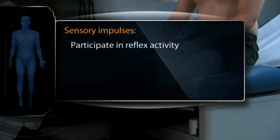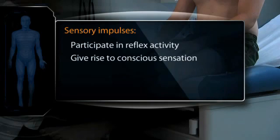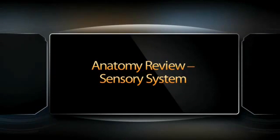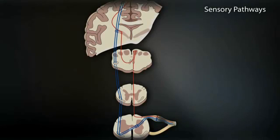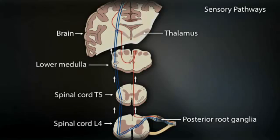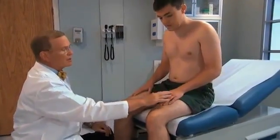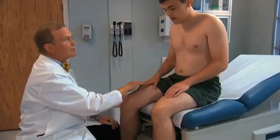Sensory impulses participate in reflex activity and give rise to conscious sensation, calibrate body position in space, and help regulate autonomic functions such as blood pressure, heart rate, and respiration. A complex system of sensory receptors relays impulses from skin, mucous membranes, muscles, tendons, and viscera that travel through peripheral projections into the posterior root ganglia, and are eventually directed to the spinal cord and into the brain. When testing sensation, use a symmetric pattern on both sides of the body. Comparison helps you to better identify where sensory losses occur.